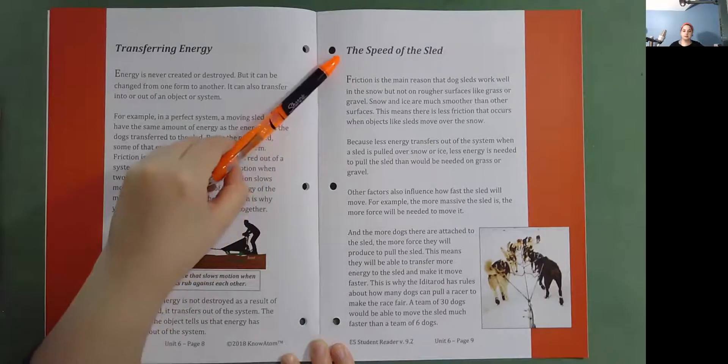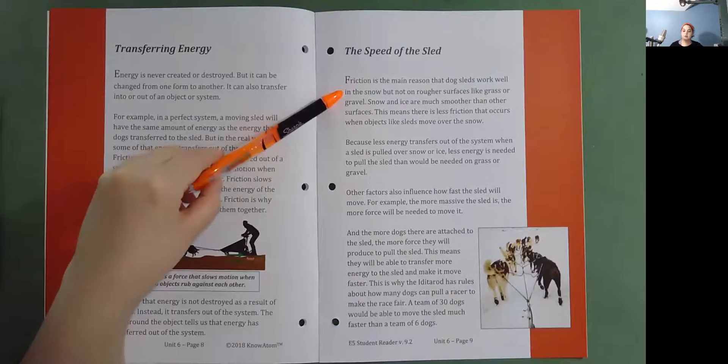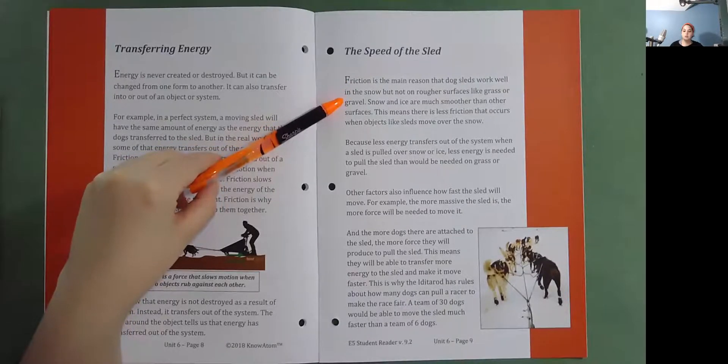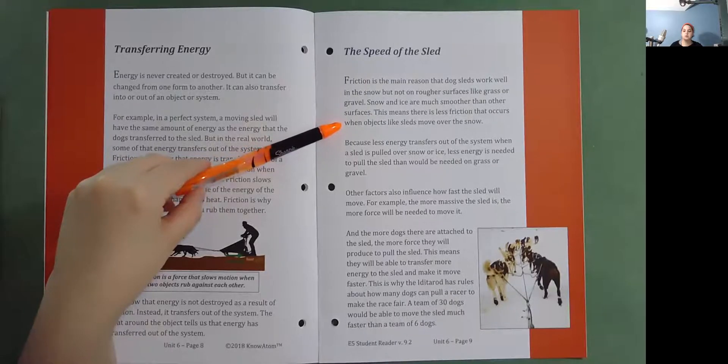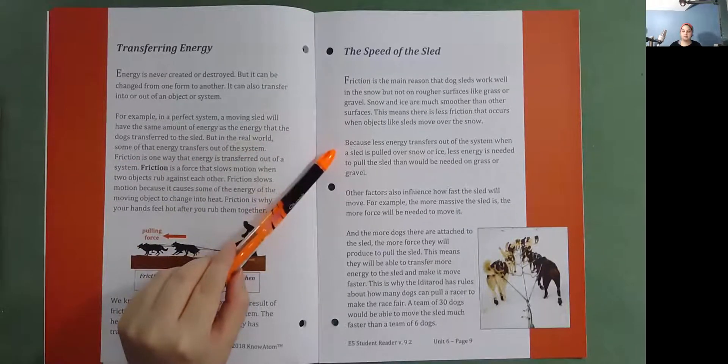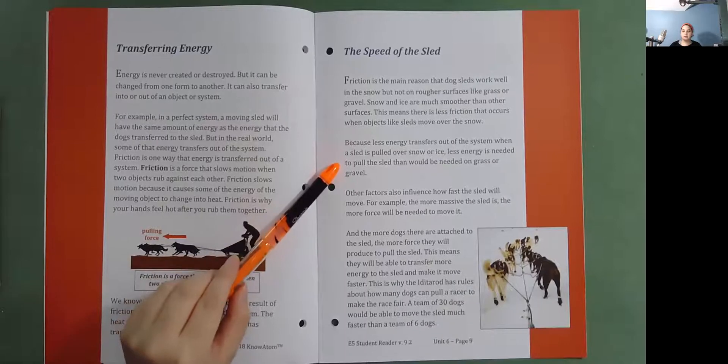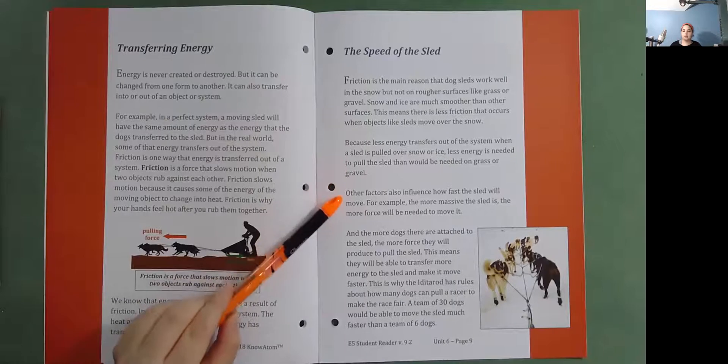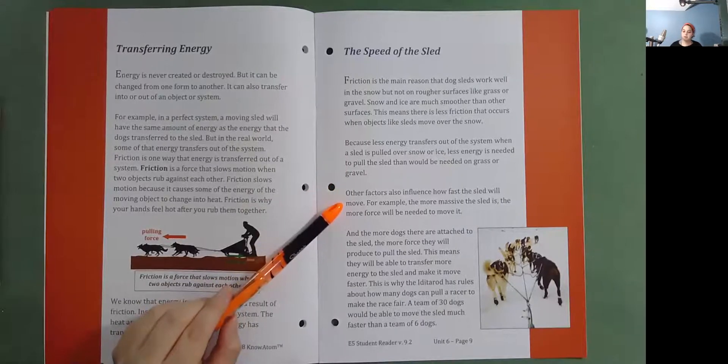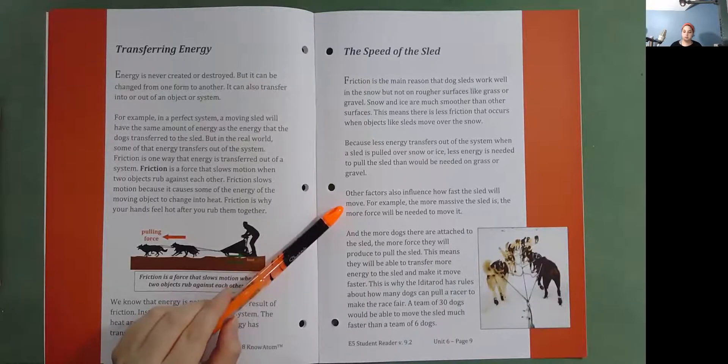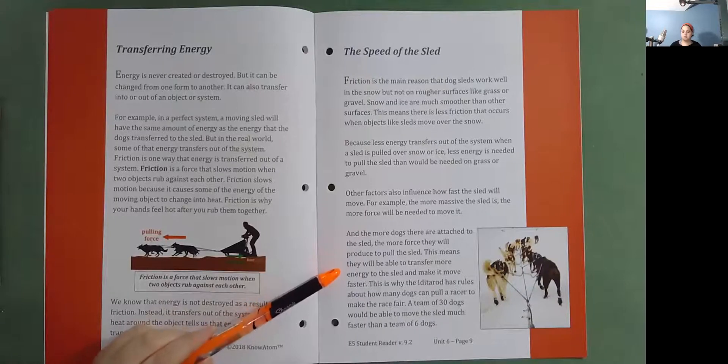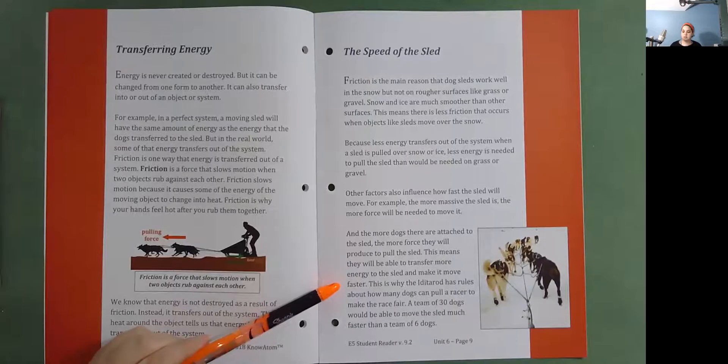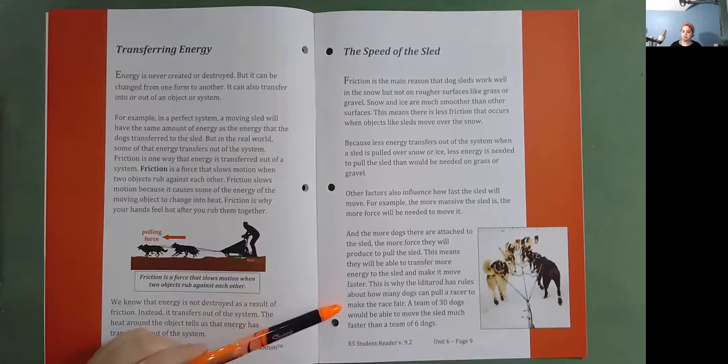The speed of the sled. Friction is the main reason that dog sleds work well in the snow, but not on rougher surfaces like grass or gravel. Snow and ice are much smoother than other surfaces. This means there is less friction that occurs when objects like sleds move over the snow. Because less energy transfers out of the system when a sled is pulled over snow or ice, less energy is needed to pull the sled than would be needed on grass or gravel. Other factors also influence how fast the sled will move. For example, the more massive the sled is, the more force will be needed to move it. And the more dogs that are attached to the sled, the more force they will produce to pull the sled. This means they will be able to transfer more energy to the sled and make it move faster. This is why the Iditarod has rules about how many dogs can pull a racer to make the race fair. A team of 30 dogs will be able to move the sled much faster than a team of six dogs.